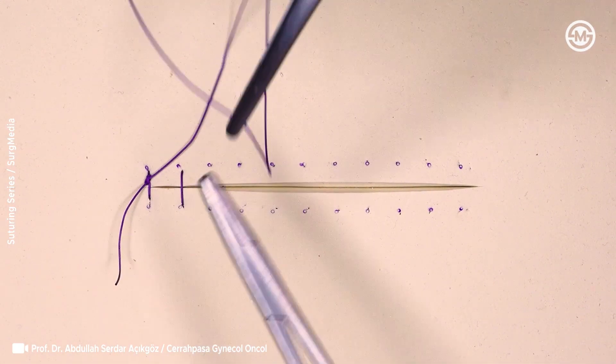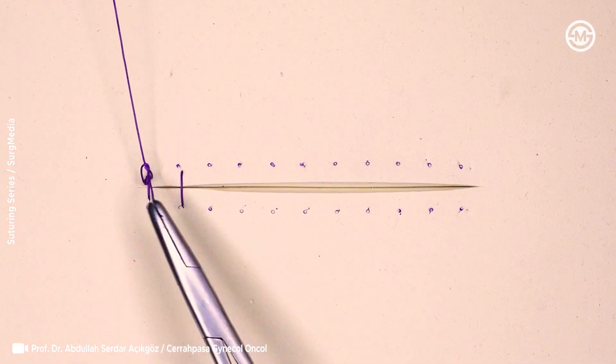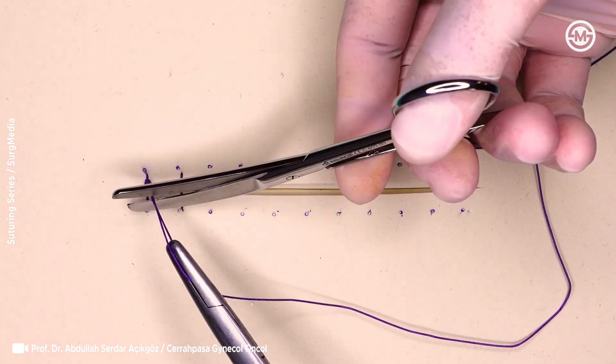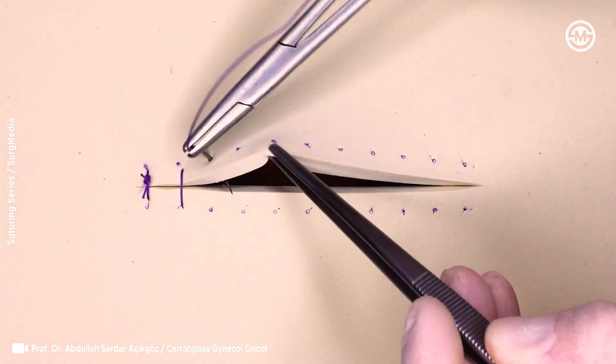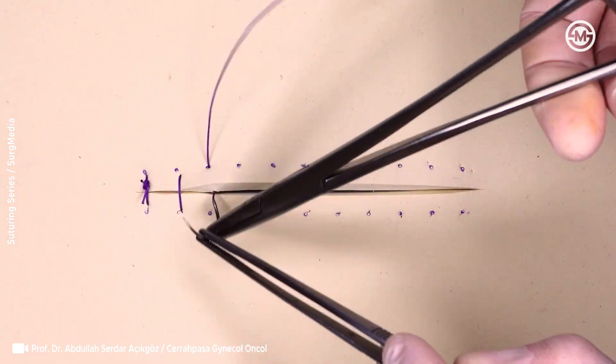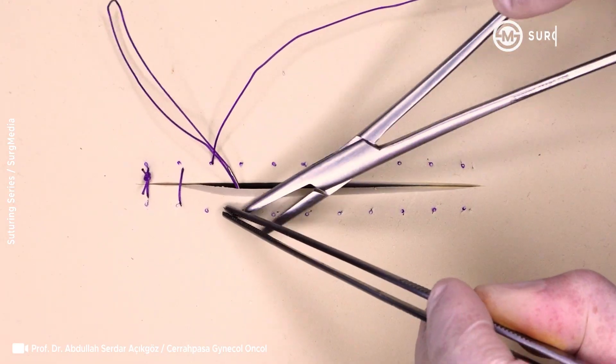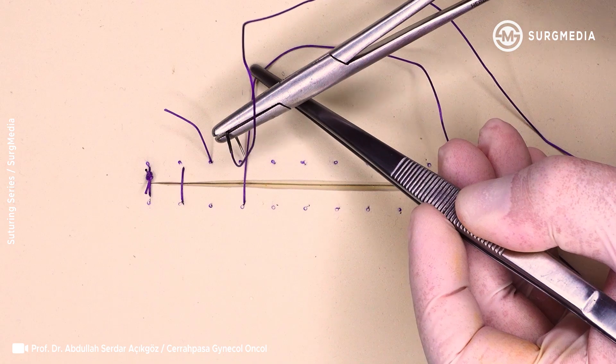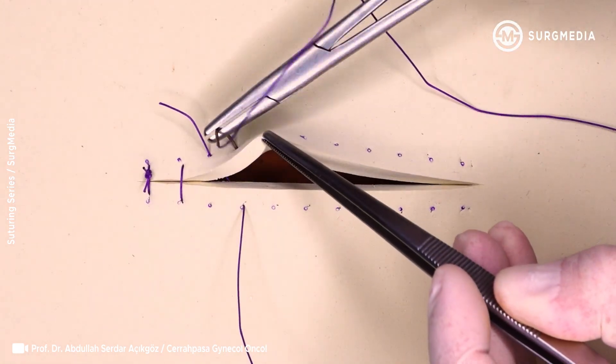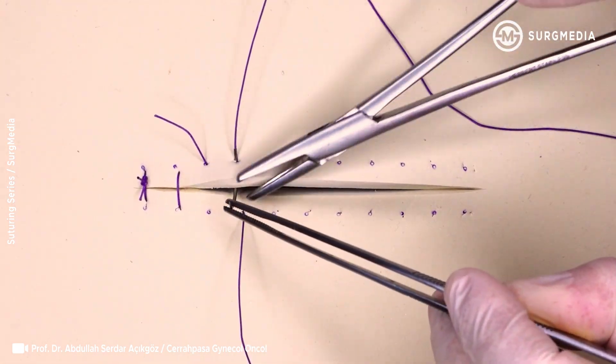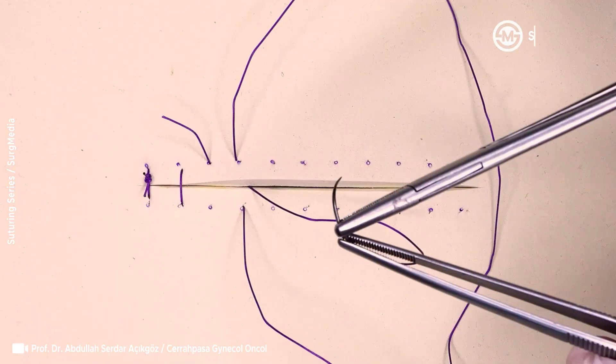The second pass comes up from below, directly across from where the suture exited, again placed obliquely, to form a parallel line. Once you tie the ends together, typically using a surgeon's knot, the final result is two parallel suture lines on the surface, but a crossing pattern hidden inside the tissue.